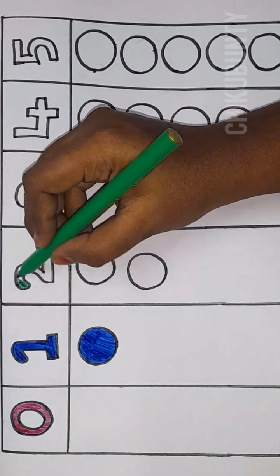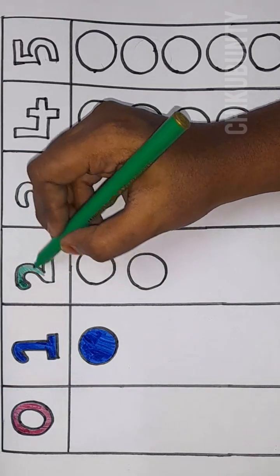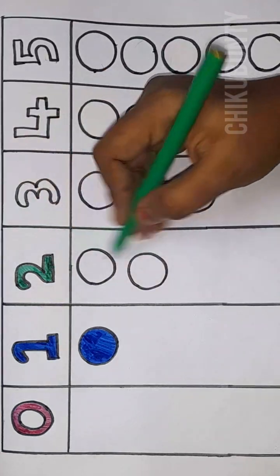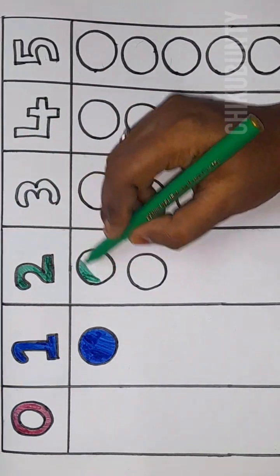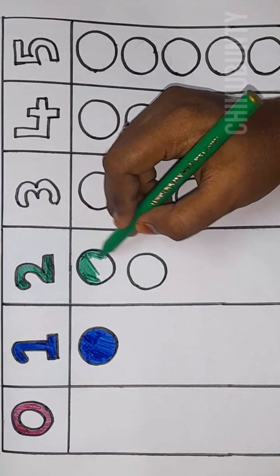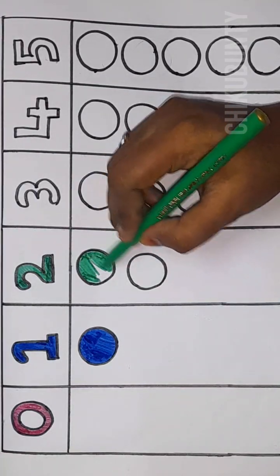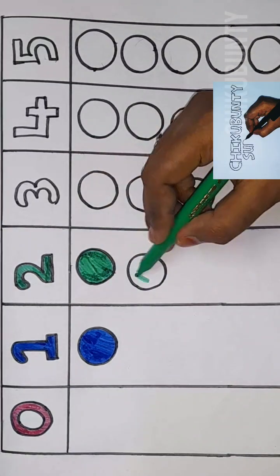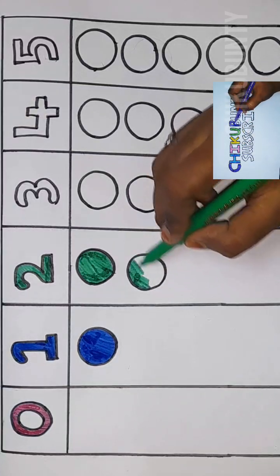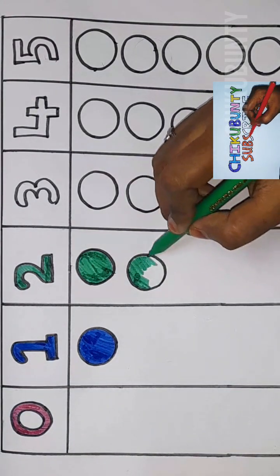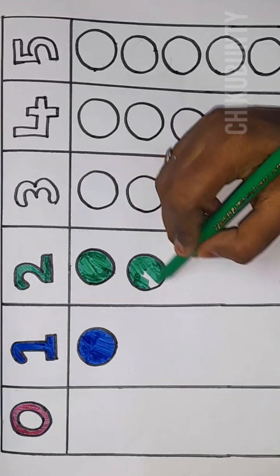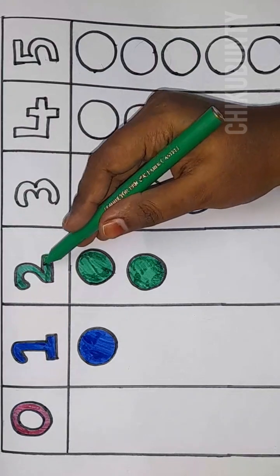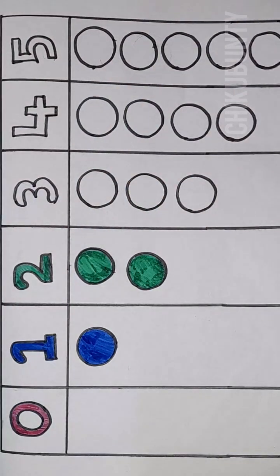Two, green color. Two, green color. Two, two circles. One, two. Two circles, two green color, one two, two circles.